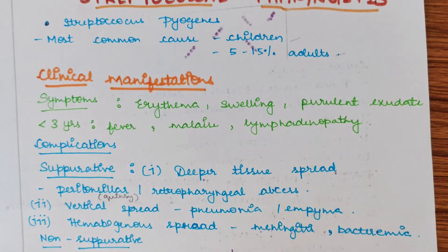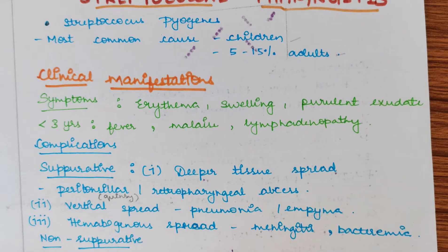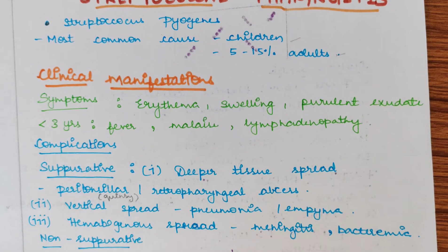The symptoms include erythema, which means redness, swelling, and purulent exudate. The most commonly affected region is the pharynx, in which the tonsils are the most affected. The tonsils will become red, swollen, and show purulent exudate. Purulent means pus-filled exudate.